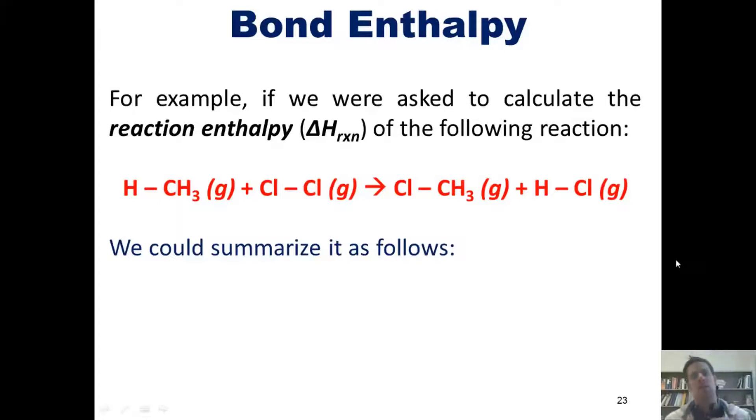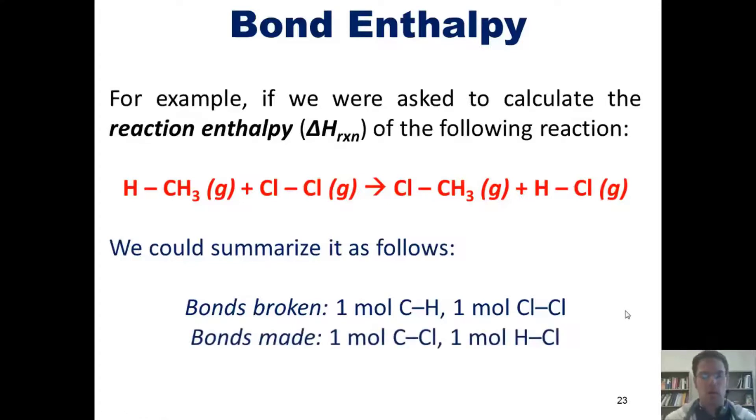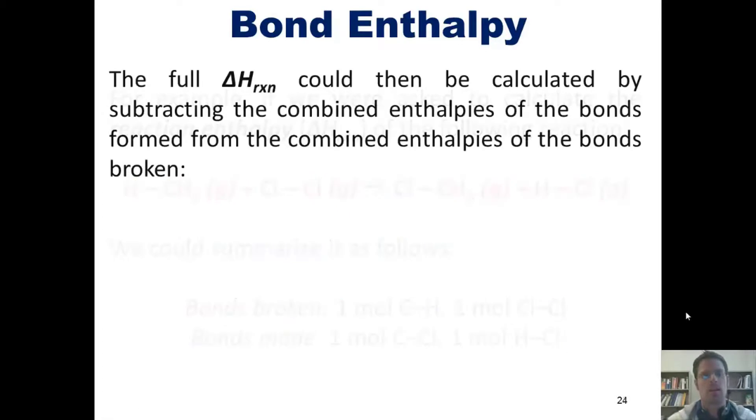We can thus say that going from left to right in this reaction, we break one mole of carbon-hydrogen single bonds and one mole of chlorine-chlorine bonds. As we go to the product side, we end up forming one mole of carbon-chlorine bonds and one mole of hydrogen-chlorine bonds. The full enthalpy of this reaction is then calculated by subtracting the combined enthalpies of the bonds formed from the combined enthalpies of the bonds broken, according to this equation.